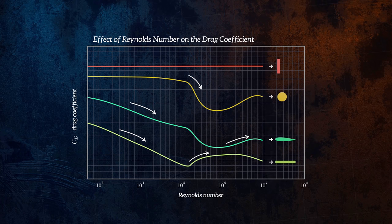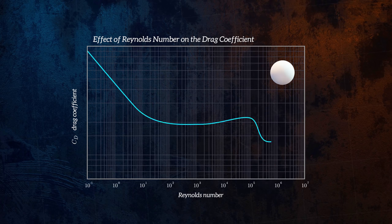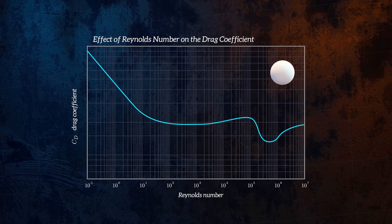For a sphere, the drag coefficient graph looks like this. One interesting thing about this graph is that it's a straight line for Reynolds number less than 1, and the line is defined as 24 divided by Reynolds number.